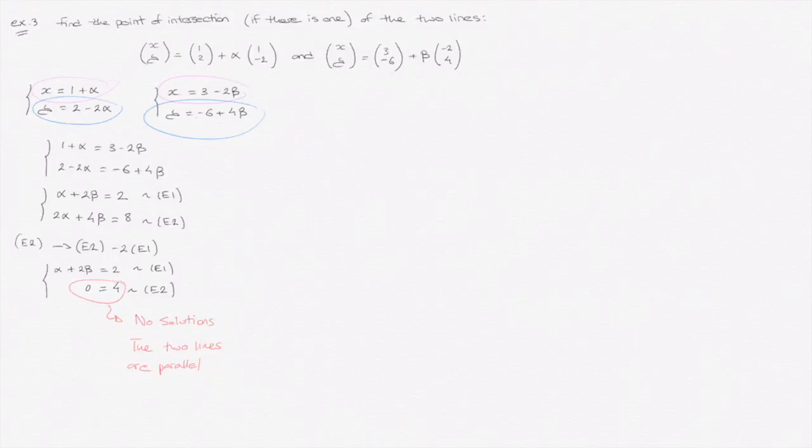It could be 2 equals 6, or 5 equals negative 10. Anything that's mathematically inconsistent in this way means that the two lines we're dealing with are parallel. The two lines will therefore never intersect, and there are therefore no points of intersection and no solutions.